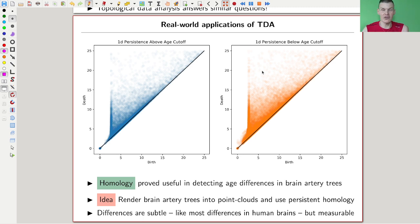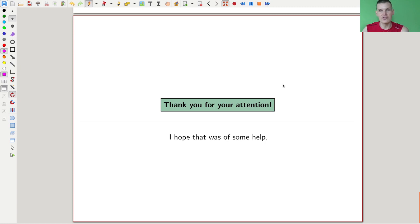So topological data analysis, in particular persistent homology, is really everywhere nowadays. Even usually applied to point clouds, but in this case even to more fancy examples like brains. Anyway, I hope you enjoyed this video and I also hope to see you next time.